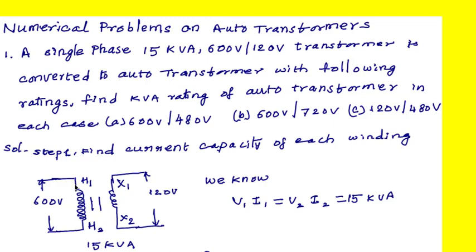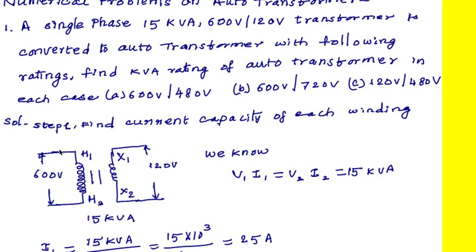First, find the maximum current capacity of the 600-volt winding. The current flowing in the primary winding is I1, and the applied voltage is V1. So I1 = kVA rating ÷ V1 = 15 kVA ÷ 600 = 15×10³ ÷ 600 = 25 amperes. This high-voltage 600-volt winding can carry a maximum of 25 amperes.